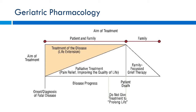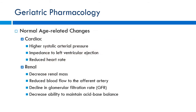As parents get older, they start thinking about things like DNRs — do not resuscitate orders. You never want to be in a situation where someone is actively coding and you don't know whether to do CPR or not. So now let's look at some normal physiological changes we see in geriatric patients.